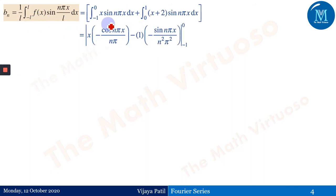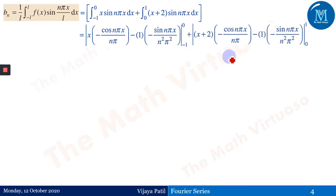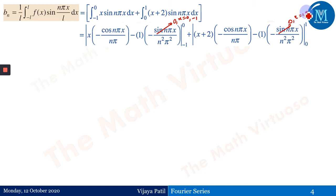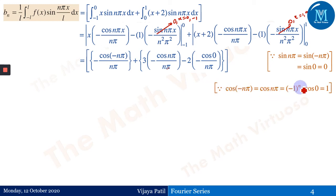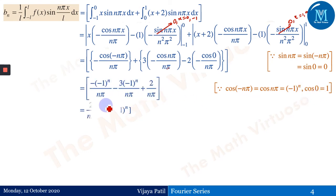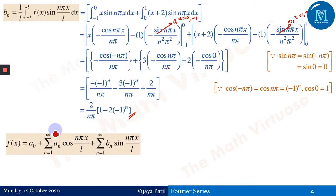For bₙ, it equals 1 by l times the integral from minus l to l of f(x) sin(nπx/l) dx. Again applying integration by parts — LIATE rule — with the same approach: sin(nπx) becomes 0 at x equals 0 and x equals minus 1 for the first integral, and becomes 0 at x equals 1 and x equals 0 for the second. So we again use the same identity. Putting upper and lower limits, using cos(minus nπ) equals cos(nπ) equals (minus 1)ⁿ and cos(0) equals 1, we get bₙ equals 2 upon nπ times (1 minus 2 times (minus 1)ⁿ).